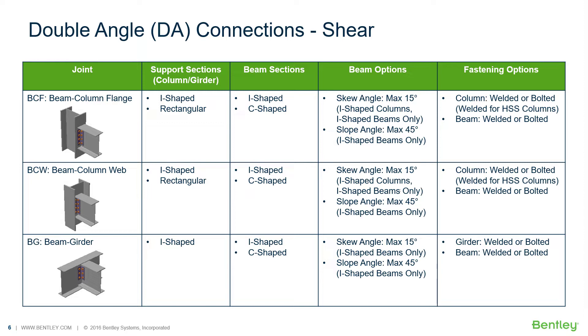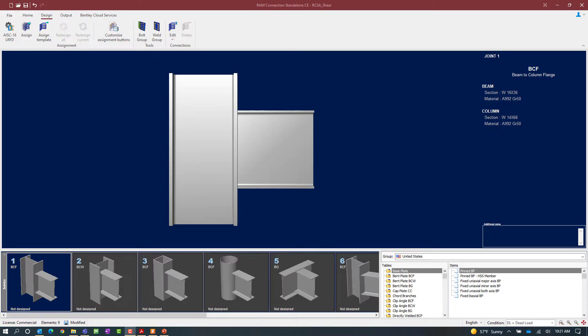For this particular video we're going to be focusing on the workflow for assigning a double angle shear connection in RAM Connection standalone to both beam-column joints and beam-girder joints.